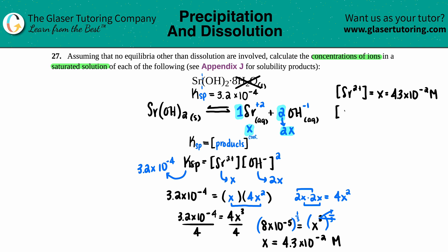And then for the OH, we did state that that was 2x. So I'm going to have to put in my 4.3 times 10 to the negative second and just times it by two.